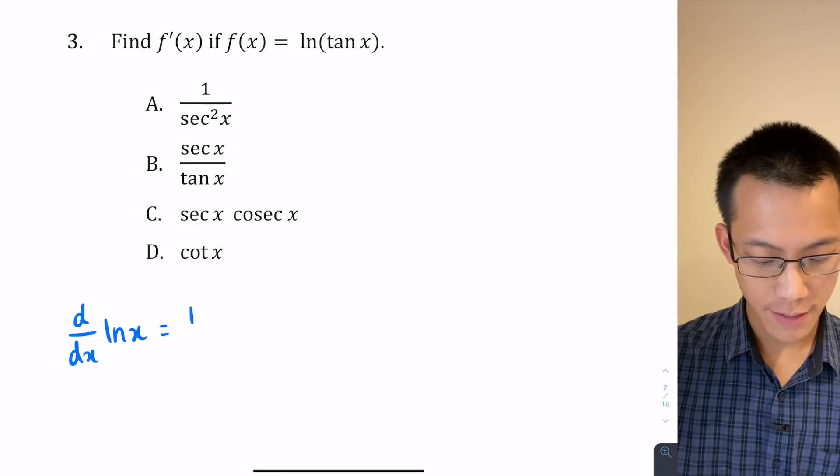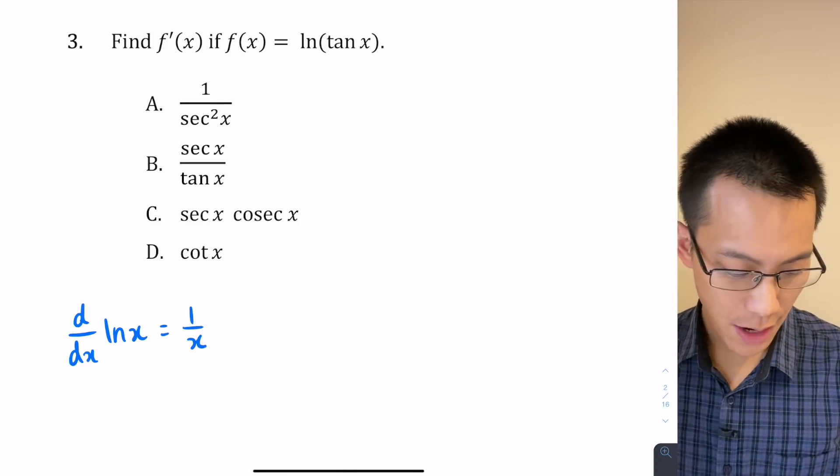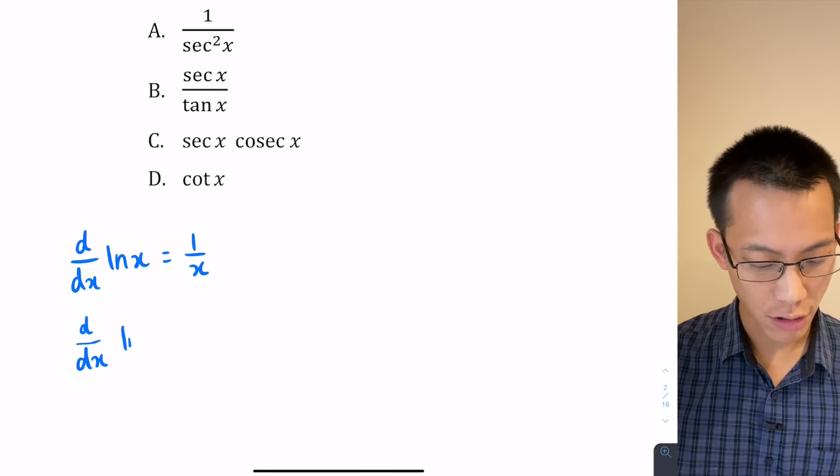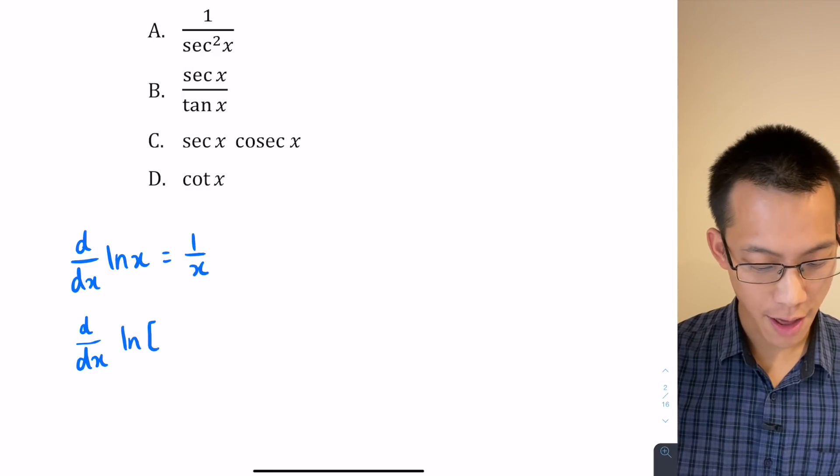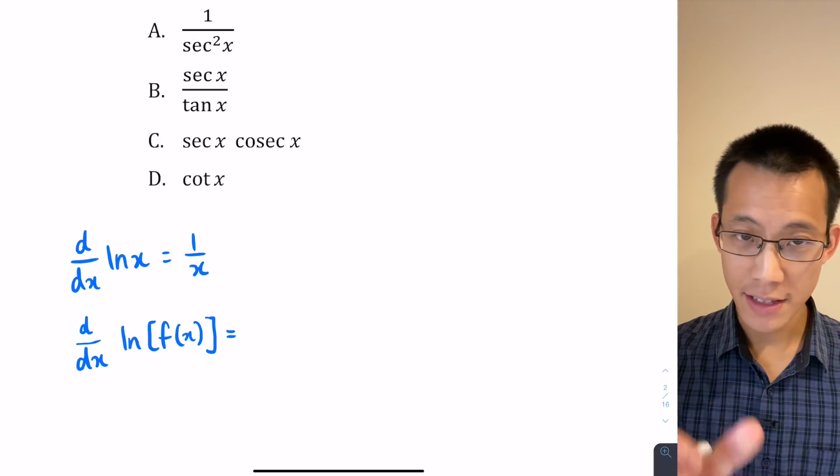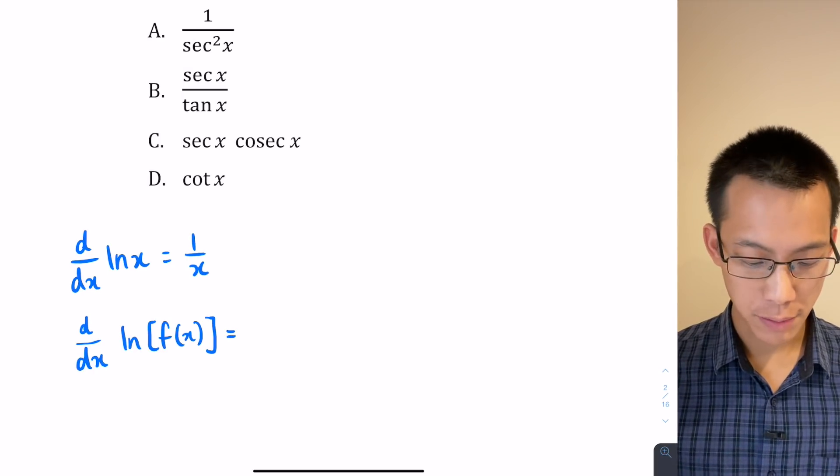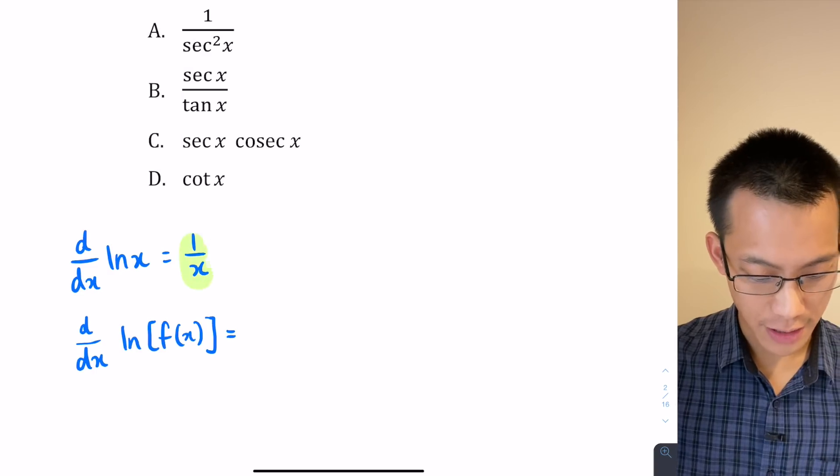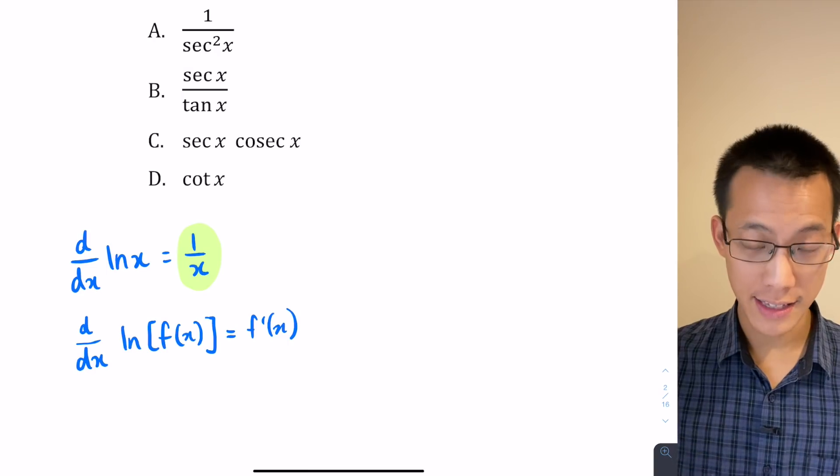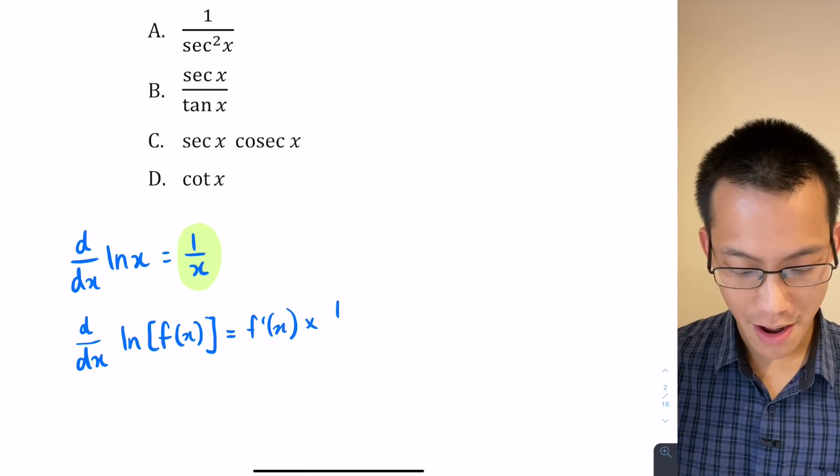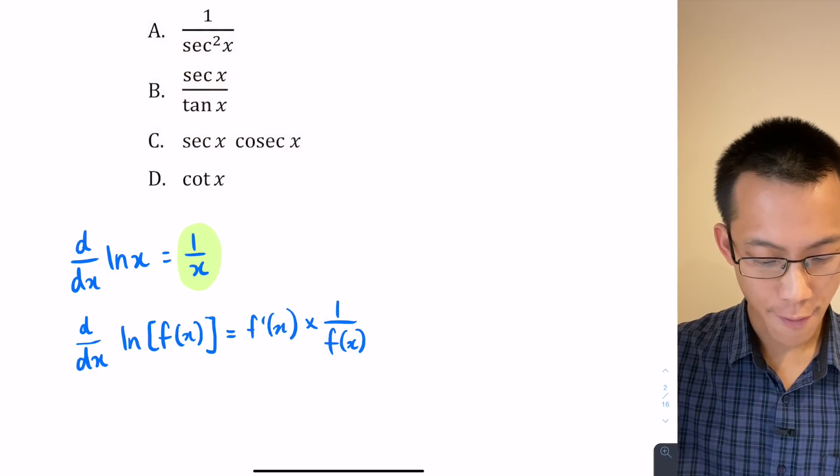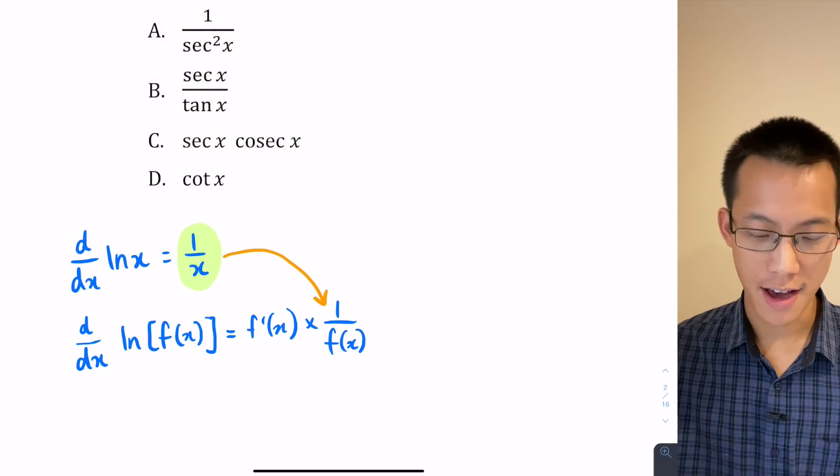If I'm differentiating the basic log function log base e of x, or ln for natural log, then what we get is this very simple result here: 1 over x. What that means is if you're differentiating and using the chain rule, so if you've got log of not just x but some other function of x that was a little more complicated, then what you're going to get is the inside function's derivative multiplied by 1 over the inside function. That's what we get from this original result here. So it would be f'(x), there's the inside derivative, multiplied by 1 over f(x).